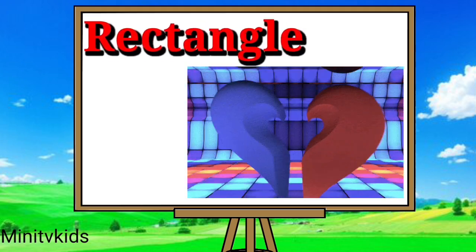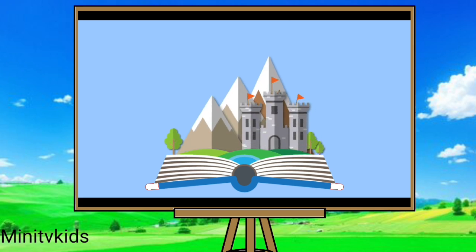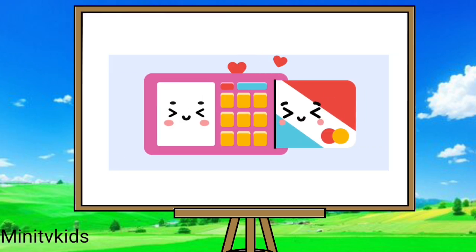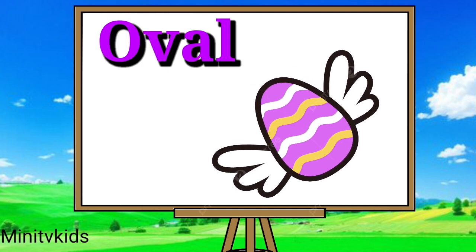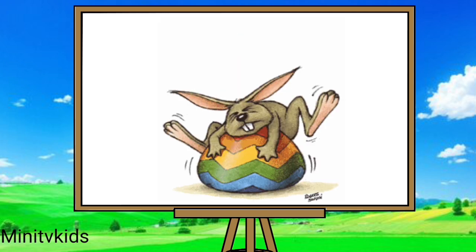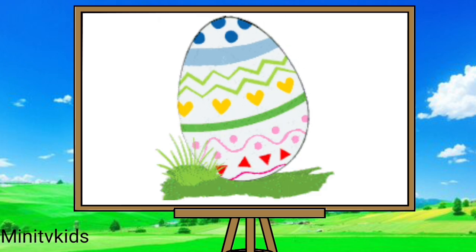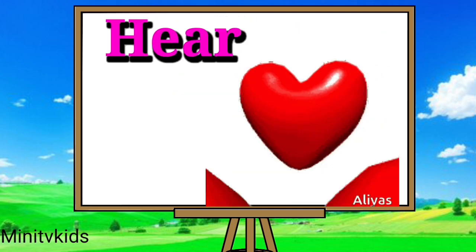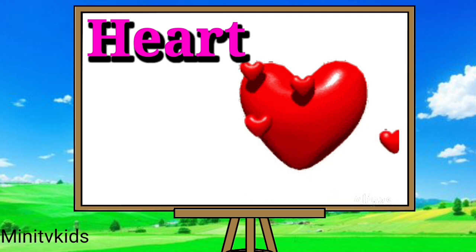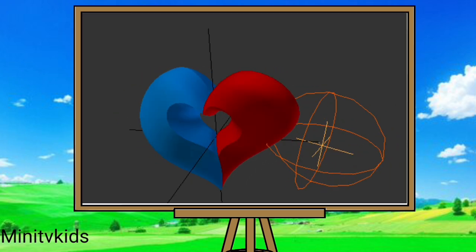Rectangle means Brita car. Rectangle means Anangal means ndakar. Oval means ndakar. Heart means ndakar.